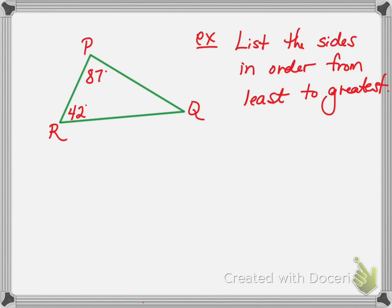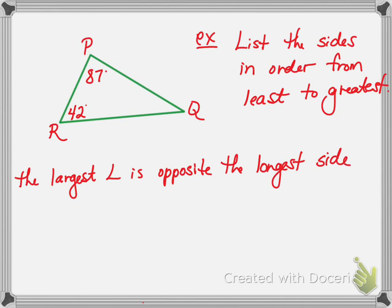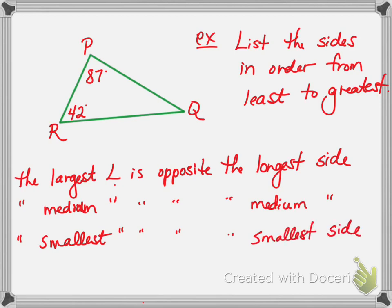So in a triangle, the largest angle is opposite the longest side. The medium angle is opposite the medium length side. And the smallest angle is opposite the shortest or smallest side. So thank goodness that all matches up.